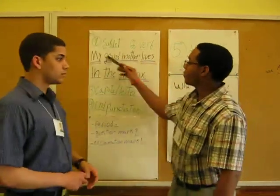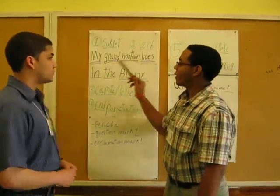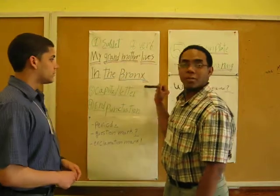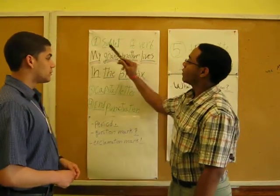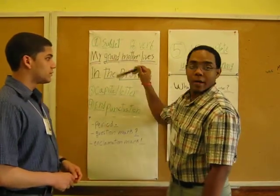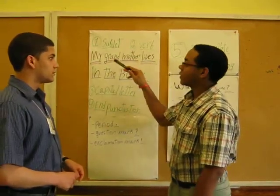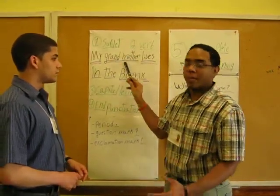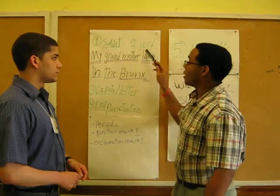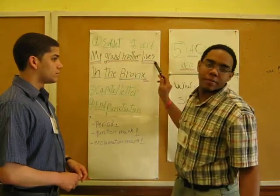For example: 'My grandmother lives in the Bronx.' The subject of this sentence is 'grandmother.' The verb is 'lives.'